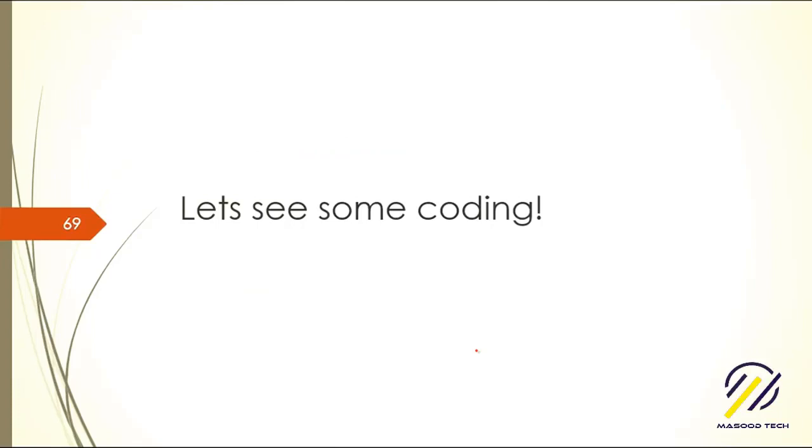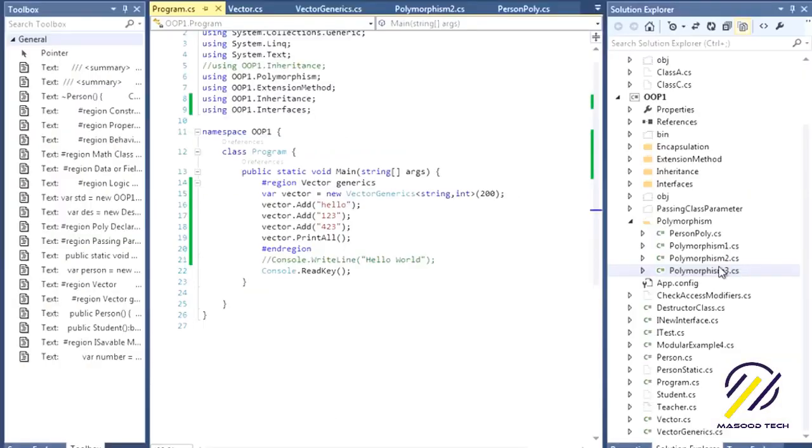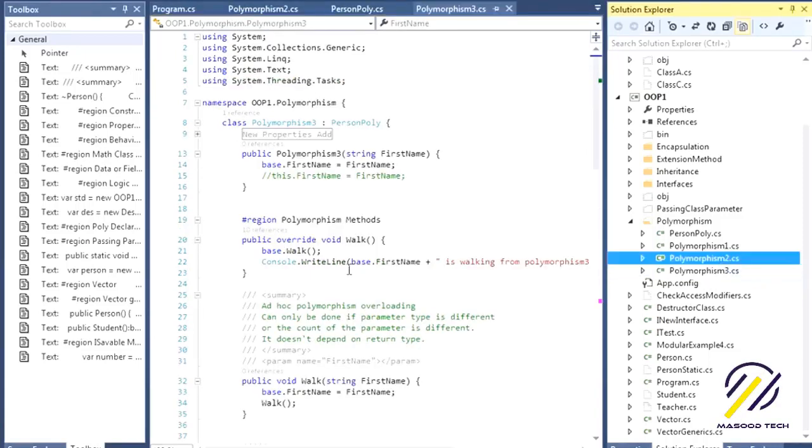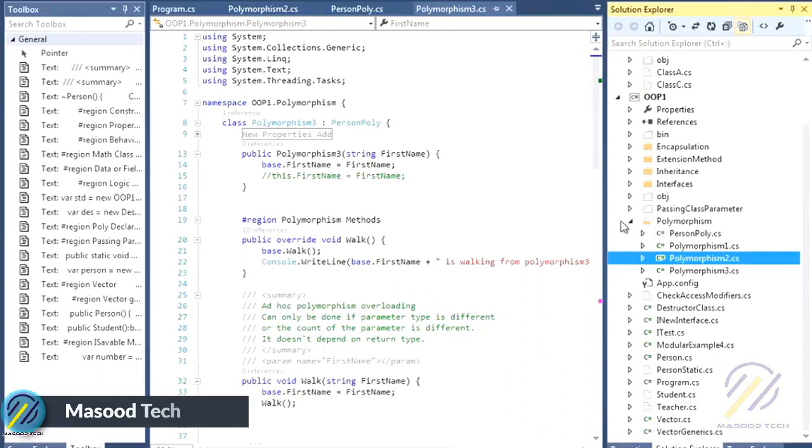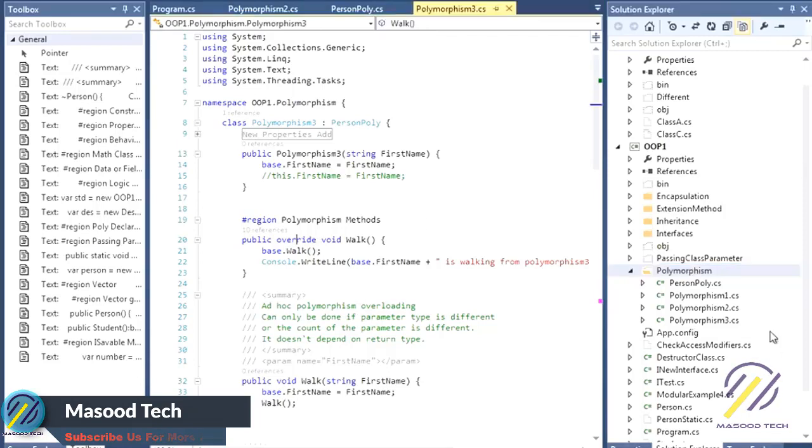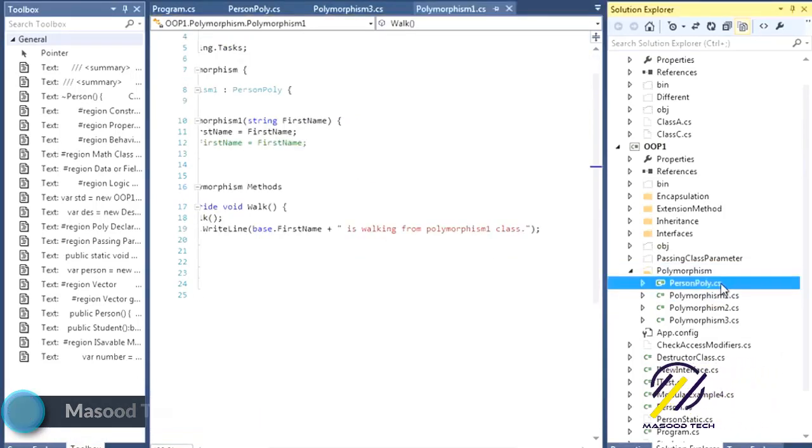Let's see some coding. Previously you've seen that to do polymorphism, what we did was put the method as virtual keyword in the base class.